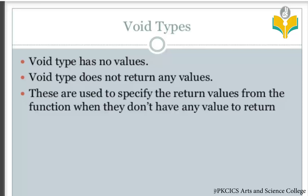The last data type is void. Void type has no values — it returns nothing to the main function. Void data types are used when a function does not return any value.